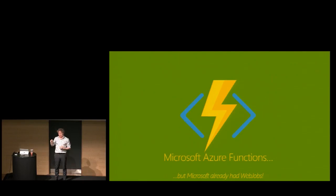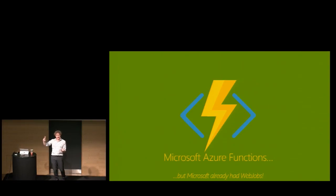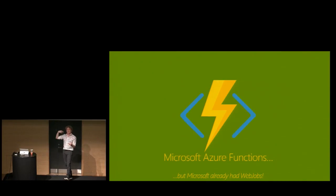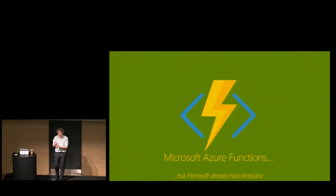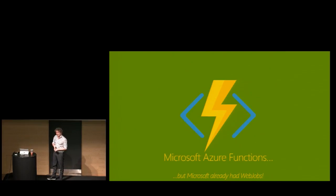Microsoft kind of already had this but it wasn't serverless, because with Web Jobs you had to deploy to a web application host. For queue polling to run continuously you'd need to flip on the 'always on' feature — and if you do that you're paying all the time. You have an application deployed, and that's not serverless. It was almost there but not quite. So Microsoft took Web Jobs in the Simple Batch direction, and regardless of who was first — Lambda is awesome, and so are Functions.